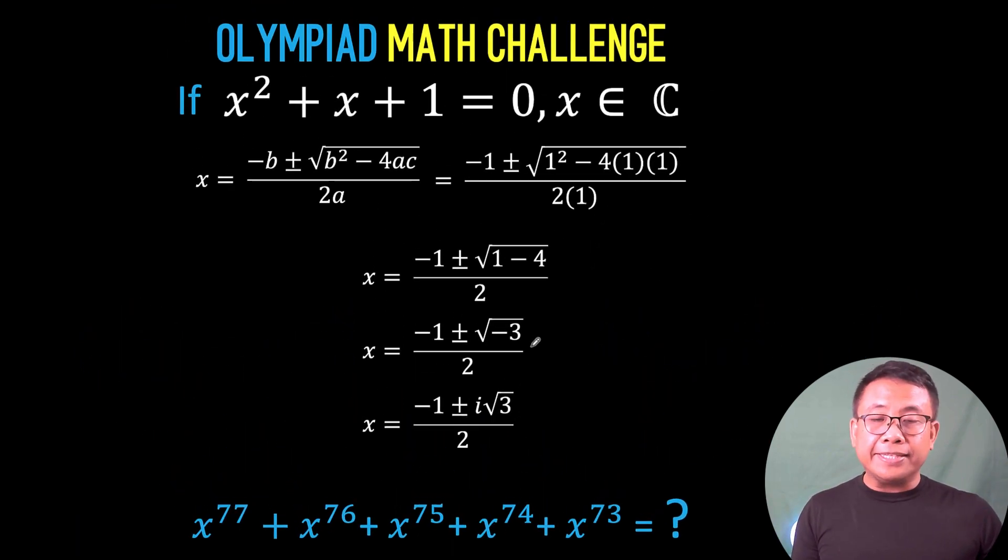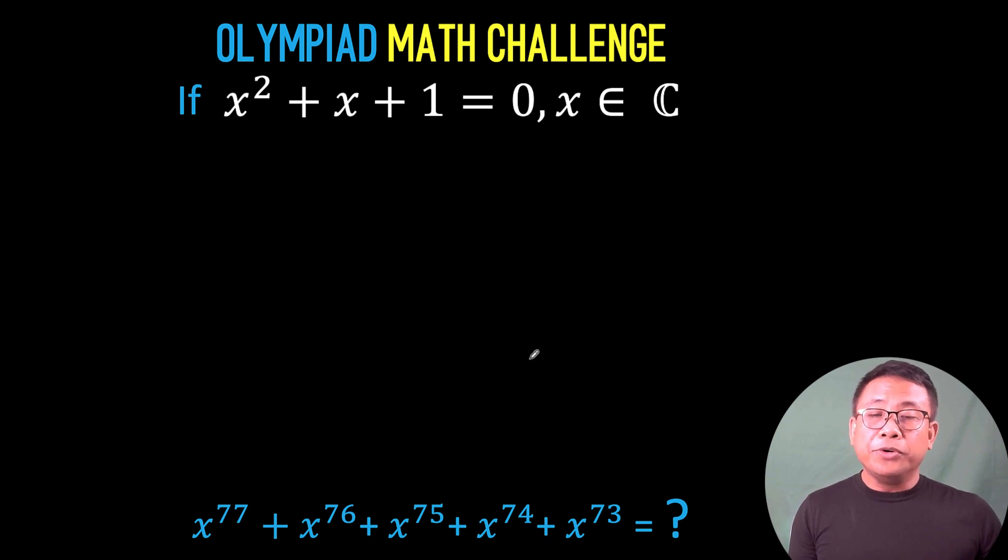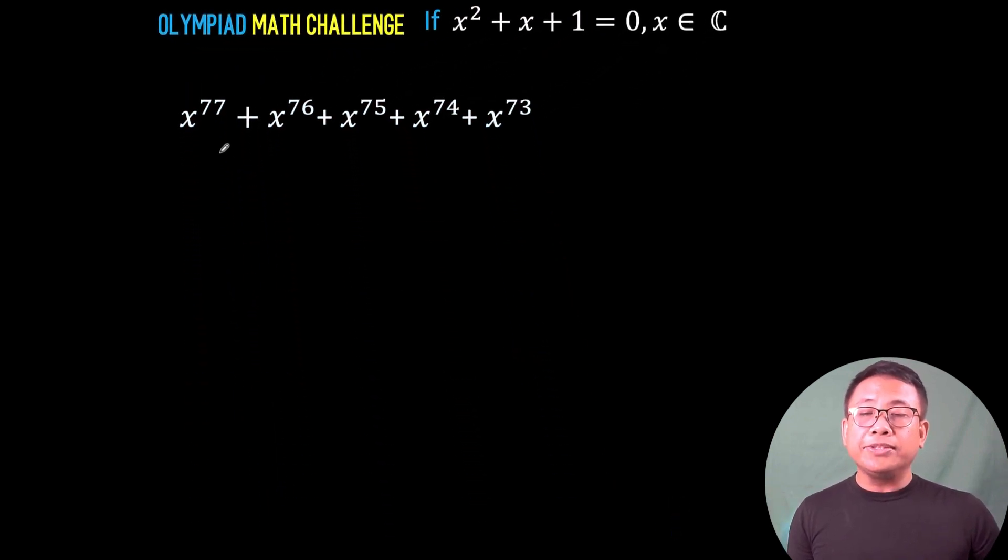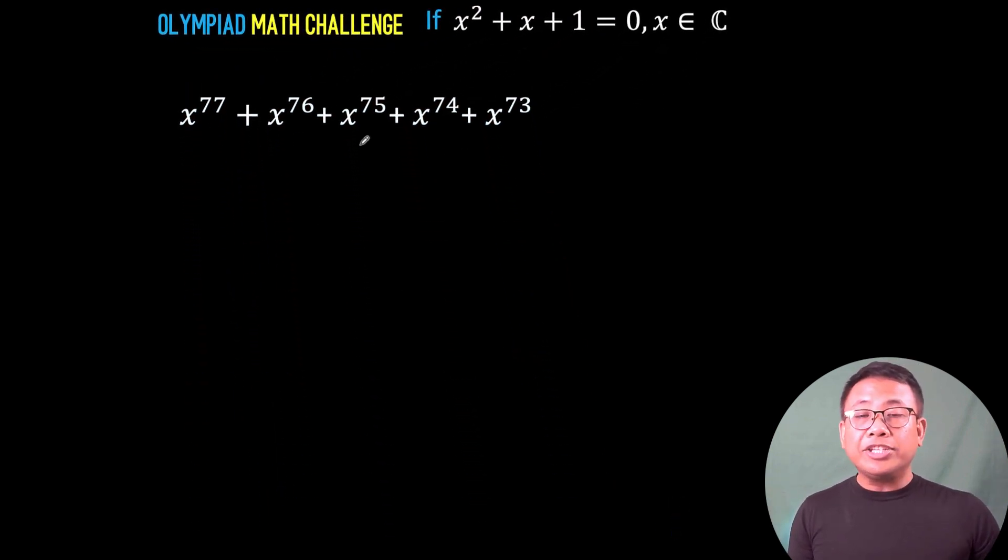A better approach would be if we start with the second equation, the equation itself that we want to find the value of. But along the way, we will use the fact that x² + x + 1 = 0. So let's do that.